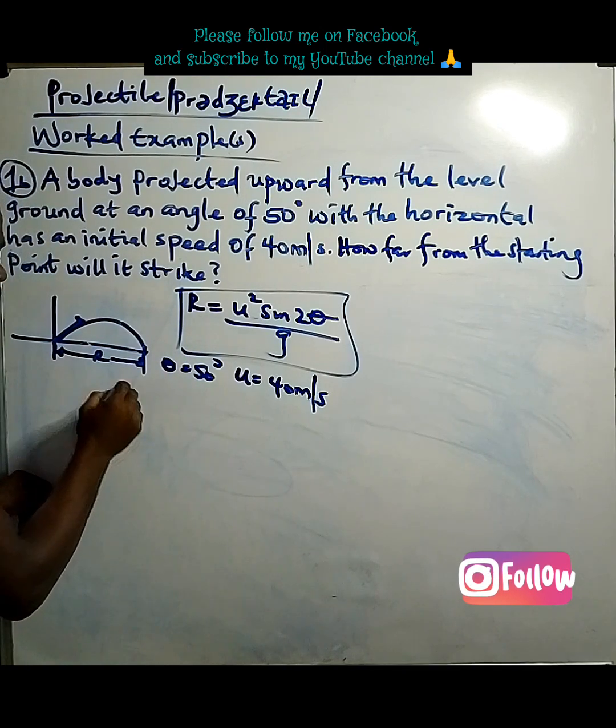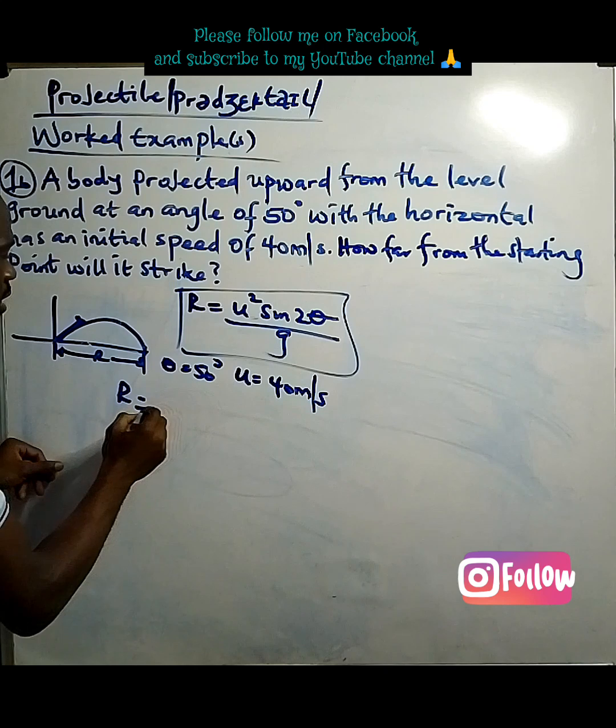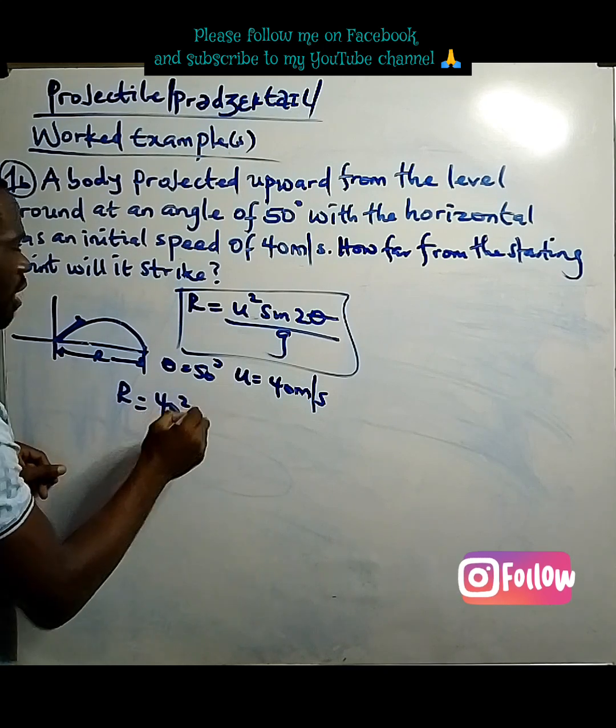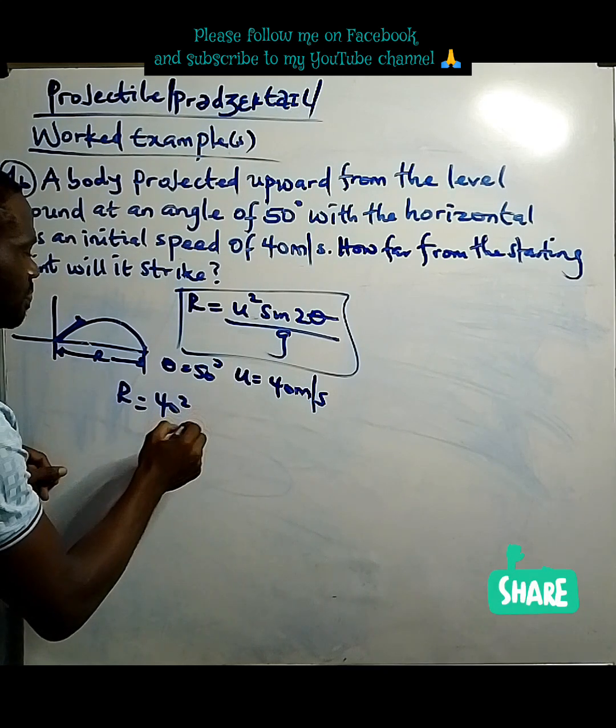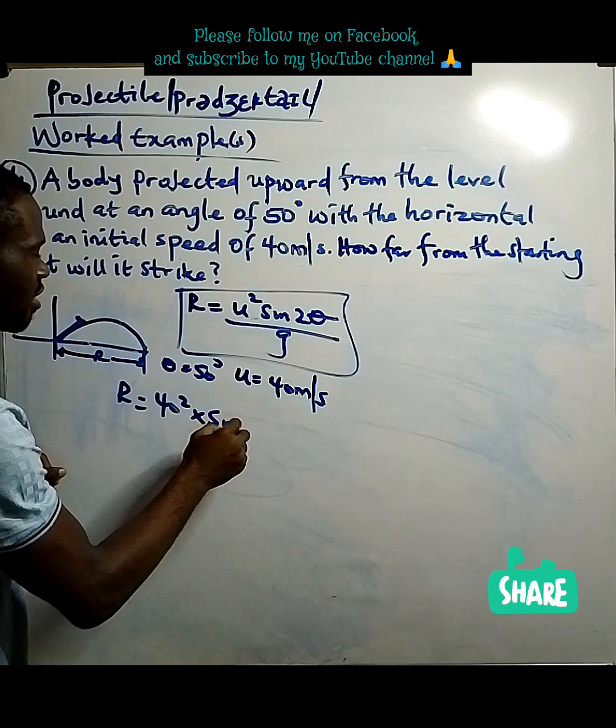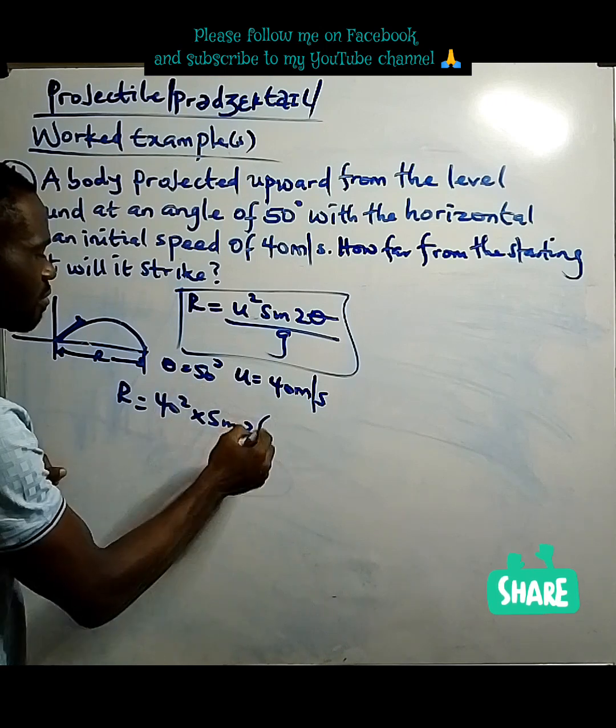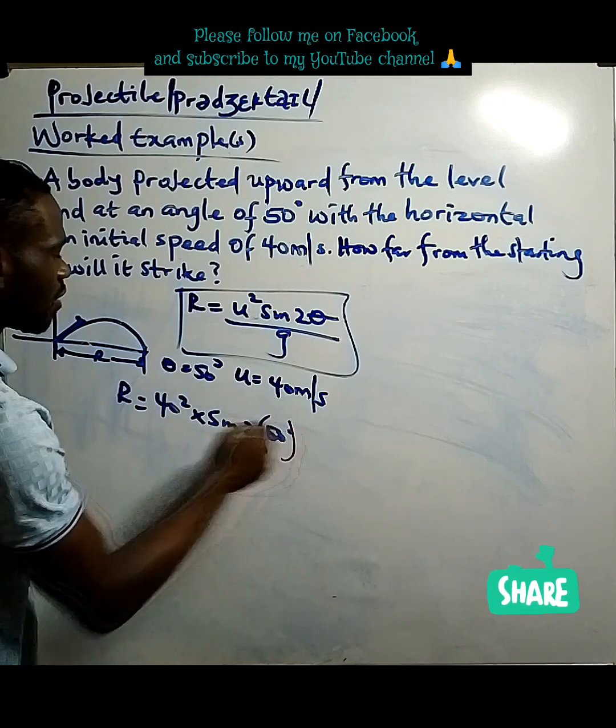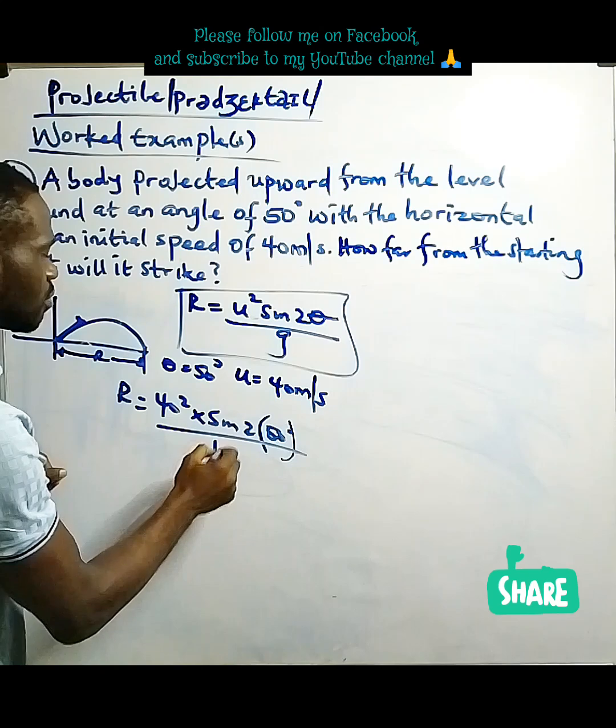So, let's use the formula to save our time. The range equals initial speed 40 squared times sine 2 theta over gravity. The angle is 50, so that is sine 100 degrees divided by gravity which is 10.